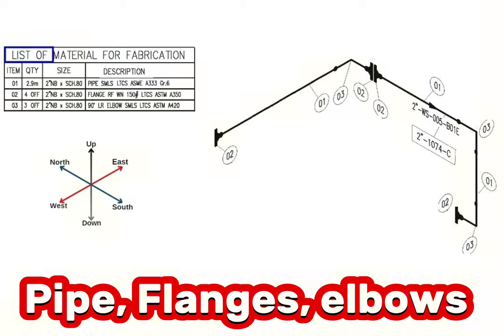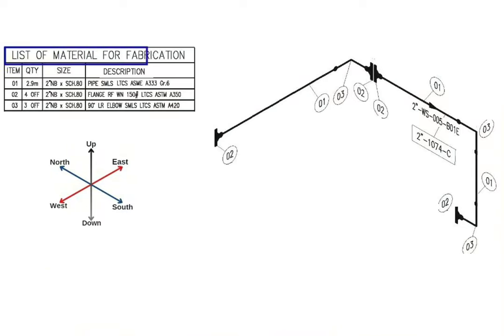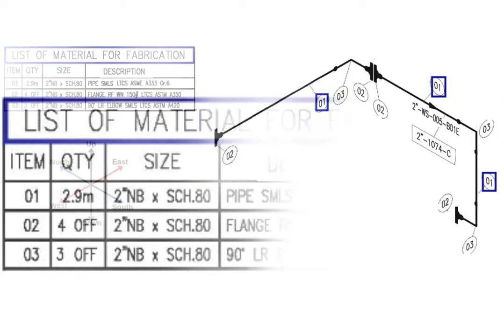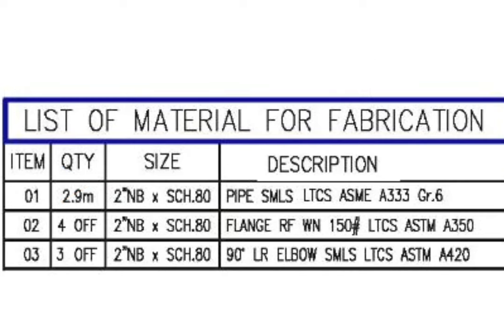List of materials for fabrication shows on this table. Detail number 1 was used in several places in the pipe drawing. Let's look at the material list. Item number 1: quantity total is 2.9 meters, size is 2 inches, wall thickness is schedule 80, pipe, seamless type, low temperature carbon steel material, ASME A333, grade 6.